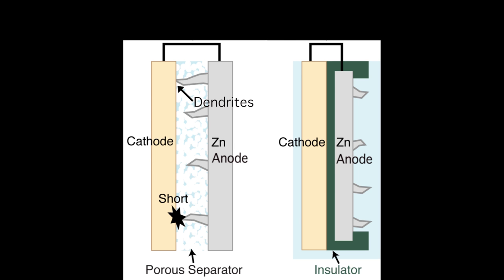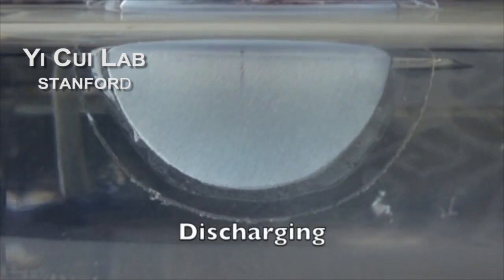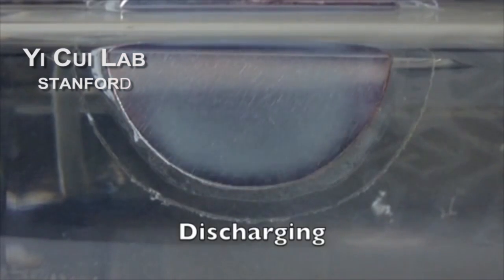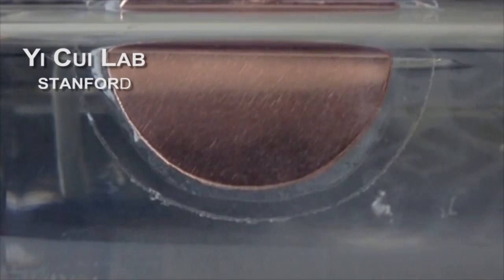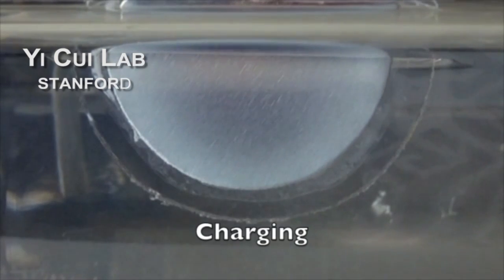Making rechargeable zinc batteries is difficult thanks to the buildup of dendrites. But with the new insulator design, the Stanford team successfully isolated dendrite growth, allowing them to charge and discharge an experimental zinc battery more than 800 times.